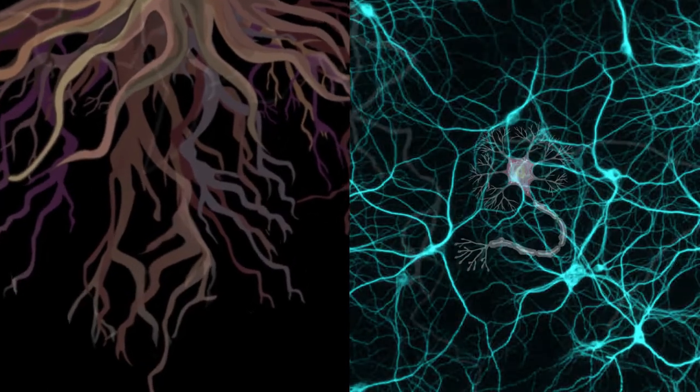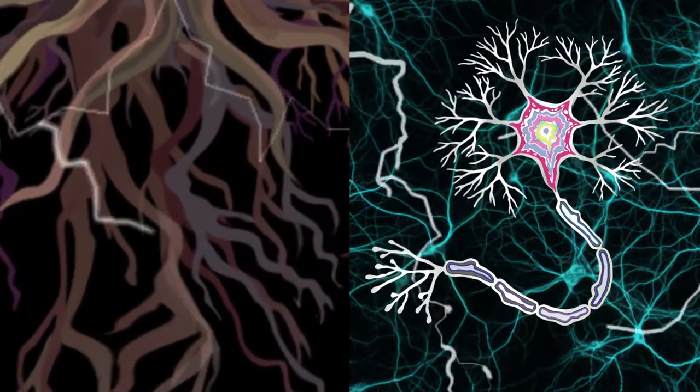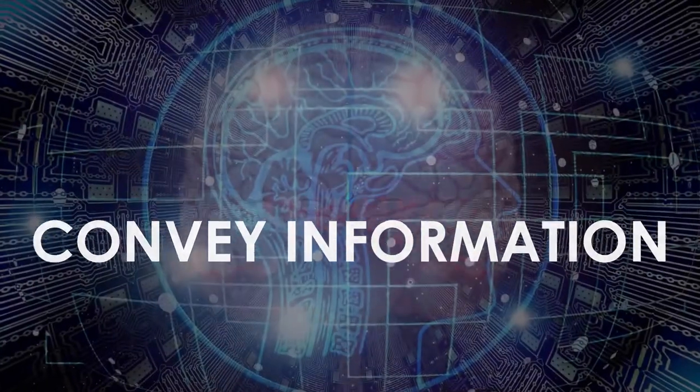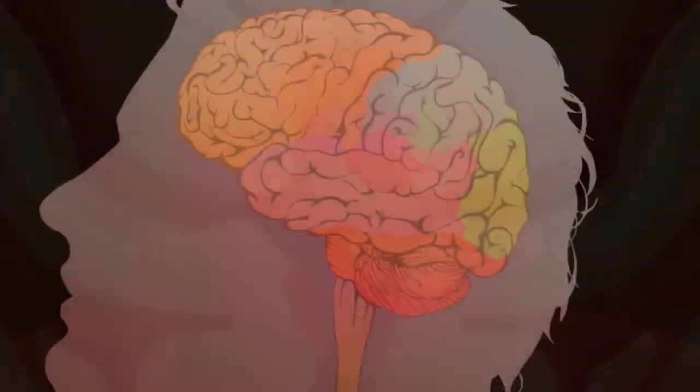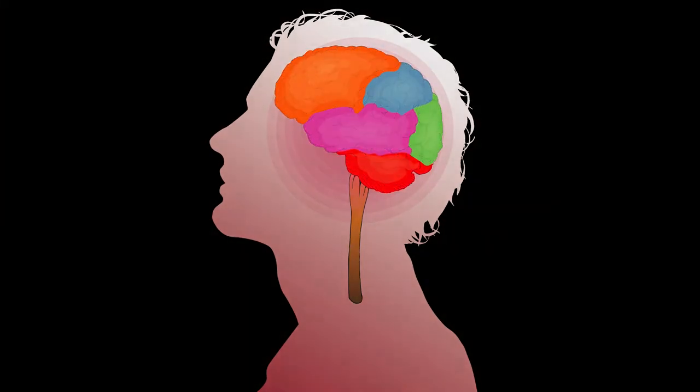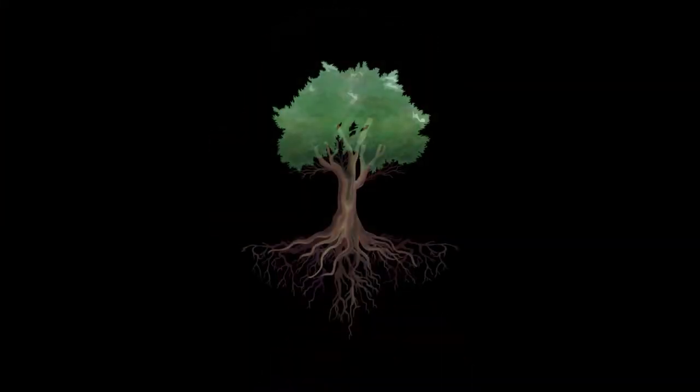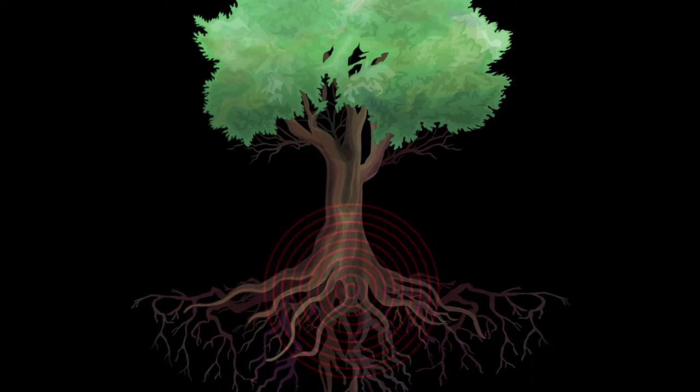Root tips and neurons both have electrical impulses or signals that help to convey information. The human brain controls all of the functions of the body in the same way that the root network controls all of the activities in the tree.